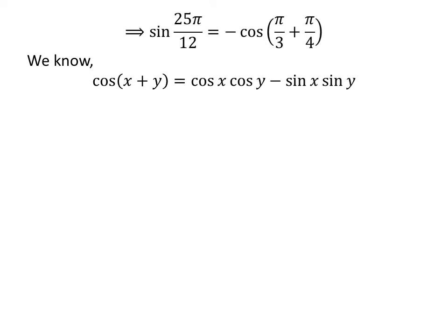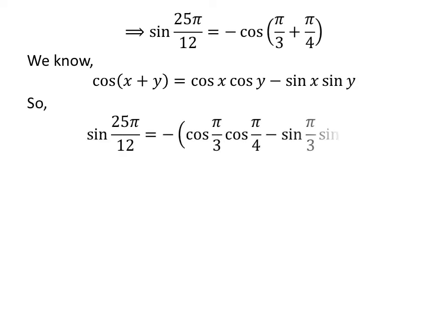We know the cosine addition formula: cosine of x plus y is equal to cosine of x times cosine of y minus sine of x times sine of y. Applying this, sine of 25 times pi upon 12 is equal to minus of cosine of pi upon 3 times cosine of pi upon 4 minus sine of pi upon 3 times sine of pi upon 4.